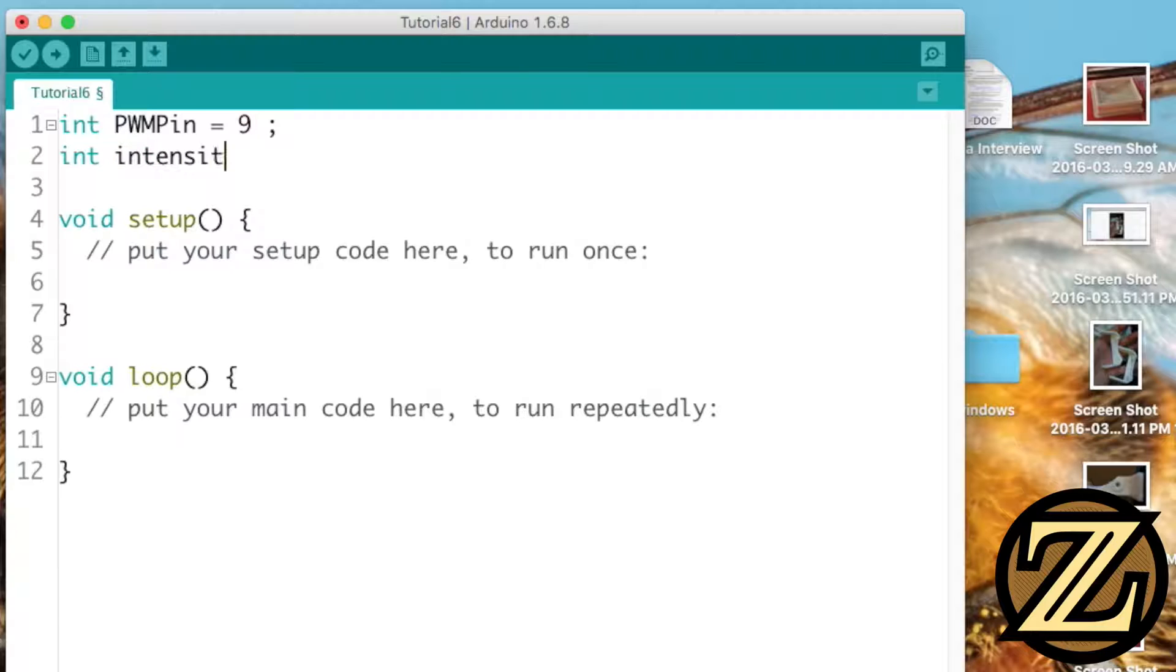The second will be a value called intensity and that will start off at 0. In your setup function set the pin mode of that PWM pin to be an output.